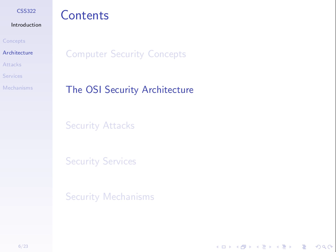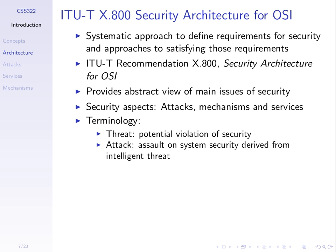Let's look at the components of securing computer networks from the perspective of the ITU — the International Telecommunications Union — which creates standards about telecommunications including network security. We'll use their notation, which introduces three main aspects: security attacks, mechanisms, and services. We'll define those three over the next few slides.